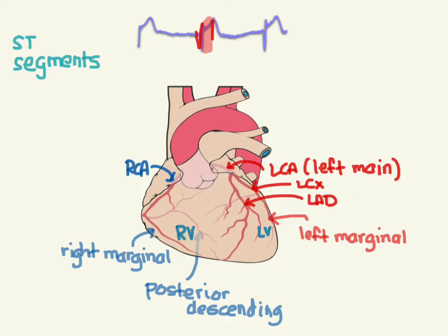Also of note is that in 20% of people, the posterior descending is supplied actually by the left circumflex, not by the right-sided blood supply. This is called either right-sided dominant or left-sided dominance, where both of them are attached and it's co-dominant. And that kind of tells you also who's giving blood to the AV node.